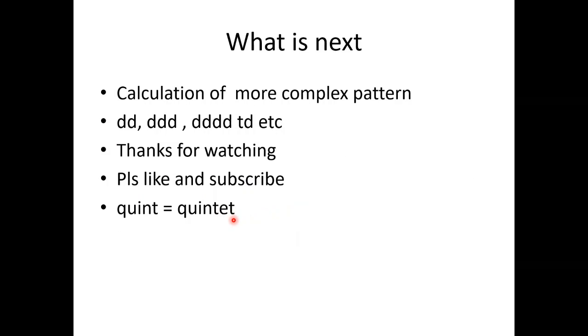What is next? I have made the series of singlet, doublet, triplet content. Then I will also make a series of doublet, apparent triplet. I will make doublet of doublet of doublet DD and quartet of doublet and DDD. This is a method to calculate the J value in this type of complex system. So please like and subscribe my channel. Thanks.